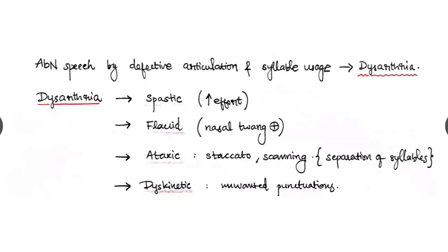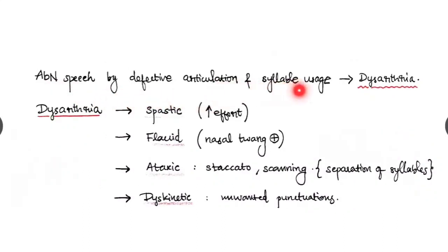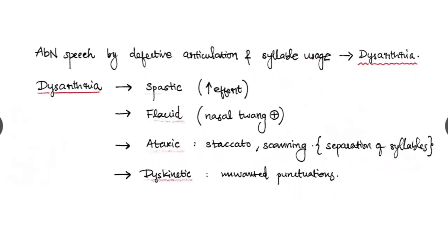Regarding the dysarthria, it is the abnormal speech by defective articulation and syllable usage. Dysarthria can be spastic where the patient takes high effort to speak out. It can be flaccid where nasal twang can be present. It can be ataxic where it will be staccato or scanning type of speech where separation of the syllables are significantly seen.